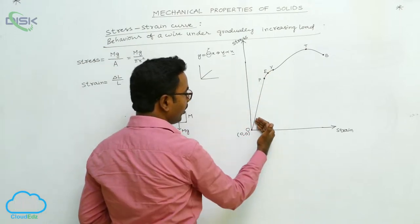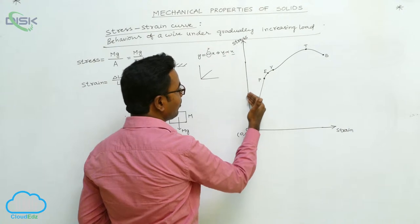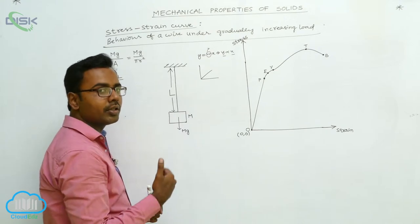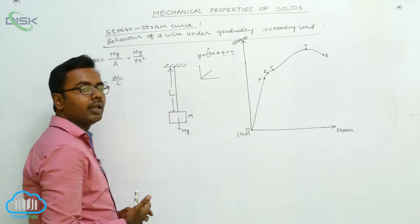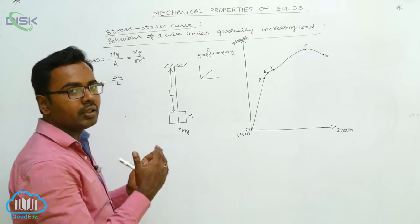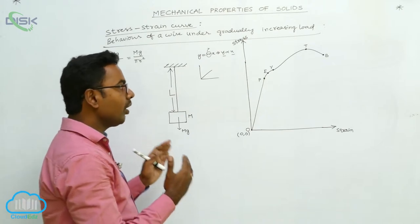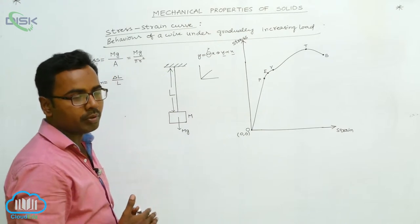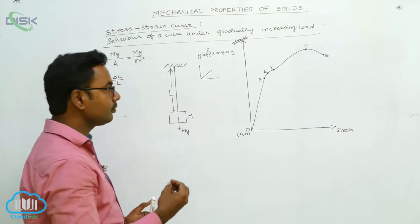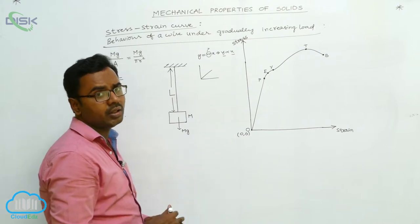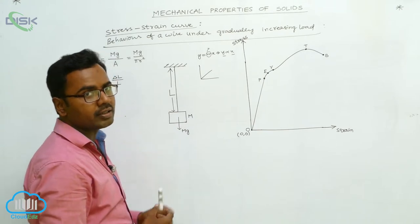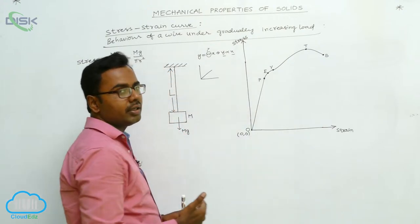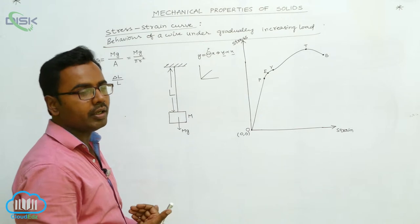Up to point E, if the corresponding load is removed, the wire regains its original length. That is why point E is called the elastic limit — up to point E, the wire retains its elasticity property. Beyond point E, the wire loses its elasticity and a permanent increase in length is produced.